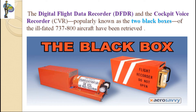The black box — actually a misnomer — consists of two things: the FDR, that is the Flight Data Recorder, and the CVR, that is the Cockpit Voice Recorder. Both are located near the tail of the aircraft so that in case of an accident they can be easily recovered.